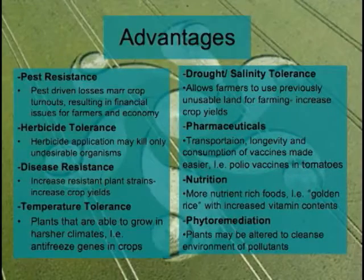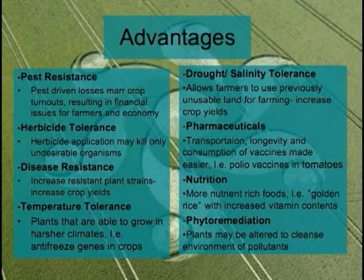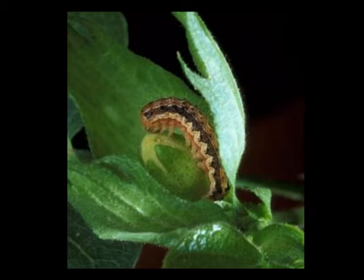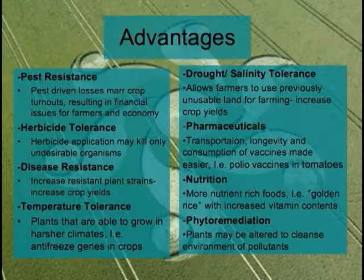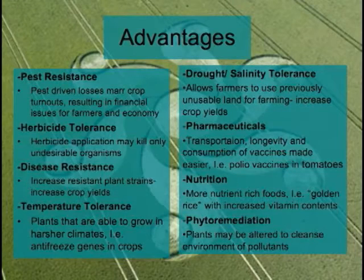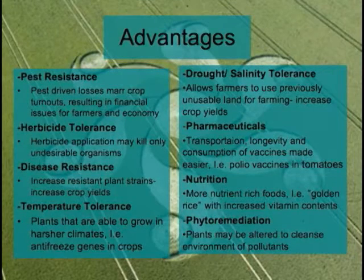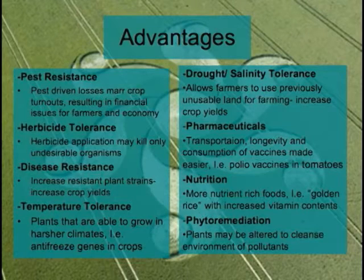The development of GMOs also has many advantages. With an ever-increasing worldwide population, the demand for food must be met. Genetically modified organisms assist in pest resistance. Pest-driven losses diminish crop turnouts, resulting in financial issues for farmers and the economy. GMOs also play a role in herbicide tolerance. Plants may be engineered to tolerate harsh herbicides, allowing these herbicides to target only undesirable organisms, such as weeds or grasses.